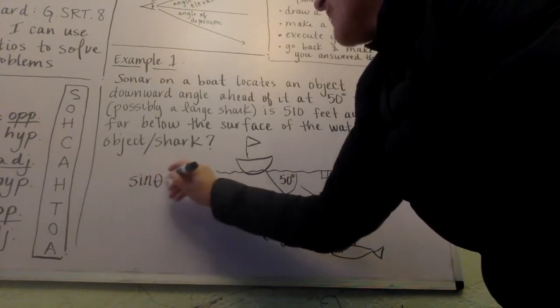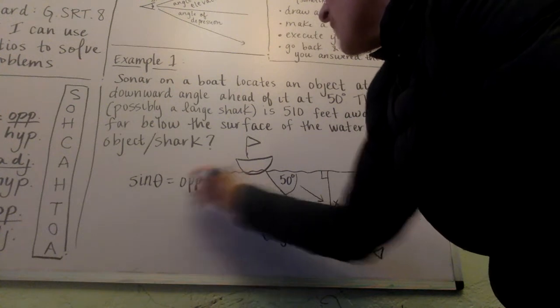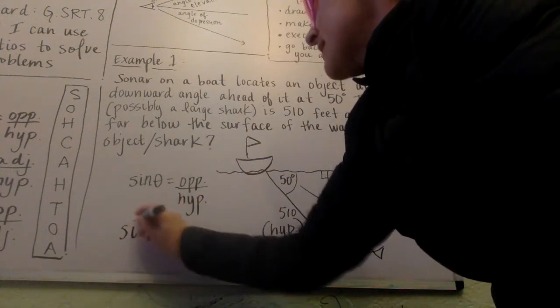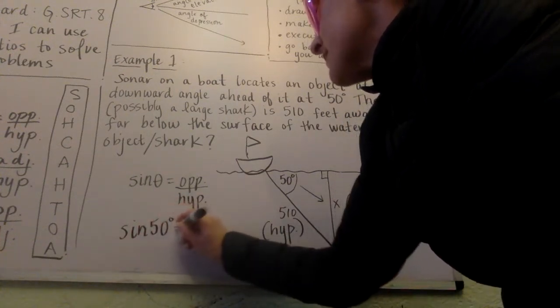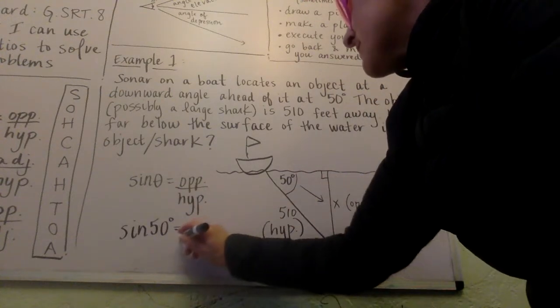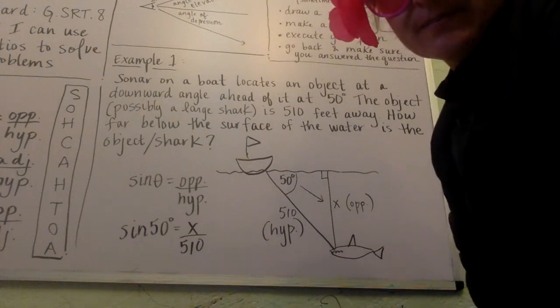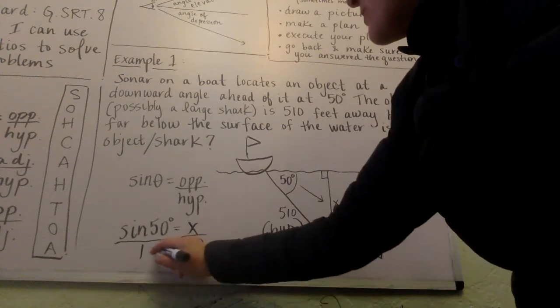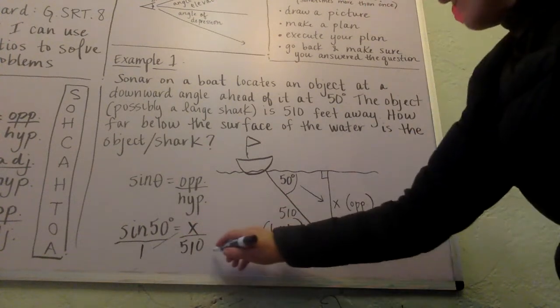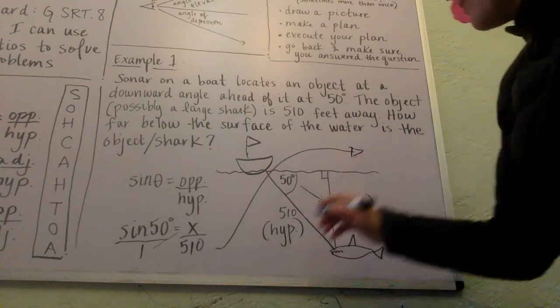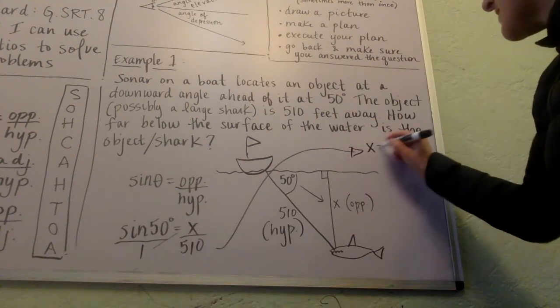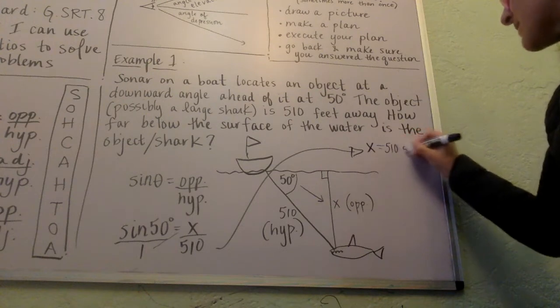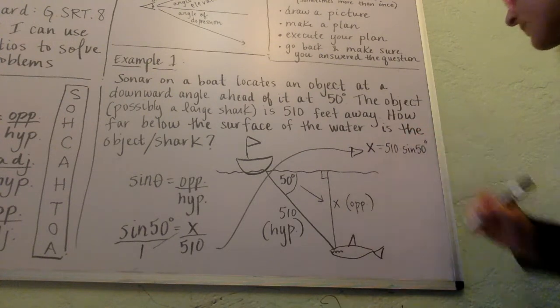Let's set this up. We know that sine of the angle is the ratio of opposite to hypotenuse. In this case, sine of 50 degrees equals x over 510. Now we cross multiply and solve. I'm going to put this over here because I'm running out of space on my whiteboard at home. 1 times x is x, and 510 times sine of 50 equals 510 times sine of 50.